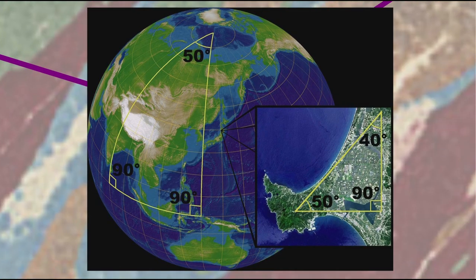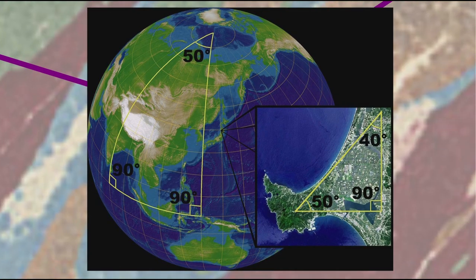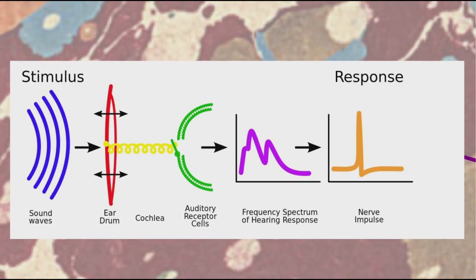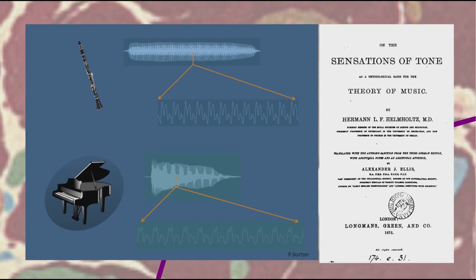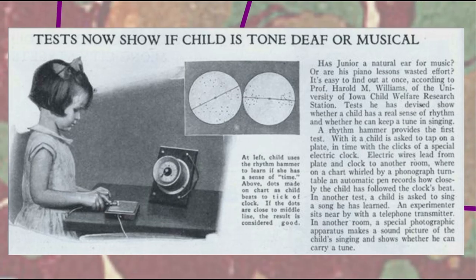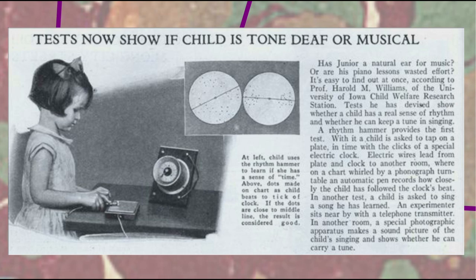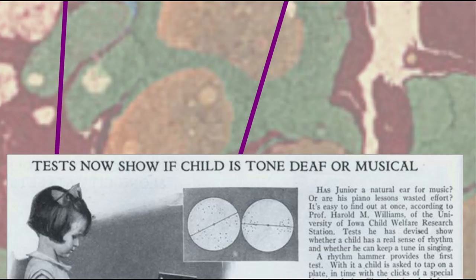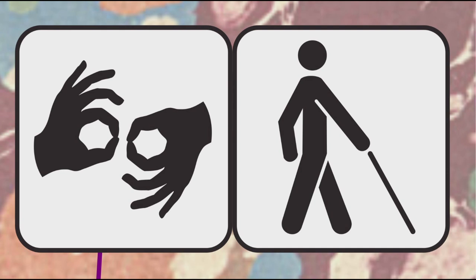Helmholtz rejected Kant's argument that the perception of space followed Euclidean geometry. He was also interested in the perception of sound and how this relates to aesthetics, writing his book Sensations of Tone about how and why certain vibrations and tones produced music while others simply produced noise — though I guess his student William James, who had amusia, or tone deafness, wasn't able to fully appreciate that part of his teacher's work. And you can add that to our growing list of sensory impairments.